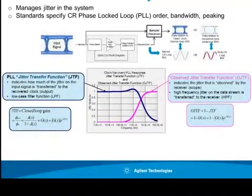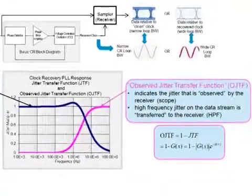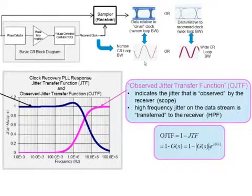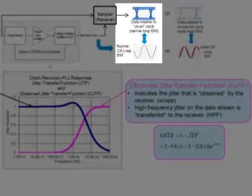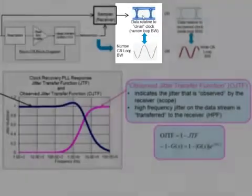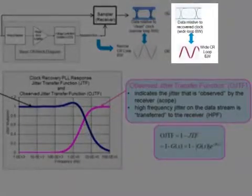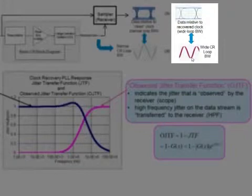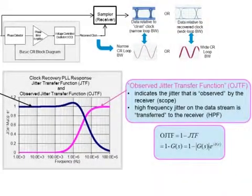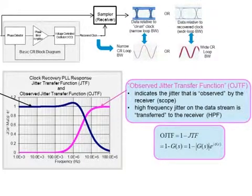Real receivers and oscilloscopes use that recovered clock as a reference signal in order to analyze the incoming signal. If you have a very clean clock and you're looking at your input signal, you're going to observe all of the incoming jitter on that signal. But if you've allowed some jitter to appear on your recovered clock, then the recovered clock and your data are going to be moving in sync, and you're going to observe a lot less jitter. We call it the observed jitter transfer function because that is what your receiver or oscilloscope is actually going to observe in terms of jitter.